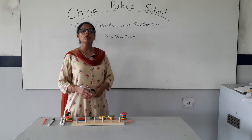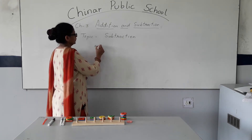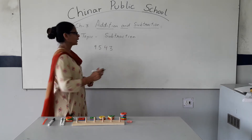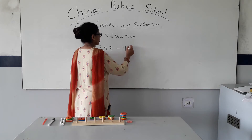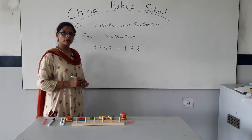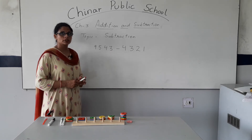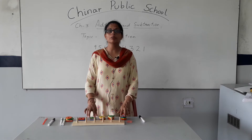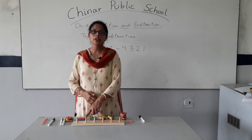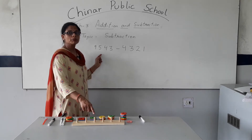Today we will do subtraction with the help of the Abacus. Suppose the number is 9543 and you have to subtract 4321. First, we arrange the number 9543 on the Abacus. In this Abacus, we always start on the right-hand side: ones, tens, hundreds, thousands, ten thousands. But we have the number only up to the thousands place, so we arrange the Abacus till the thousands place.